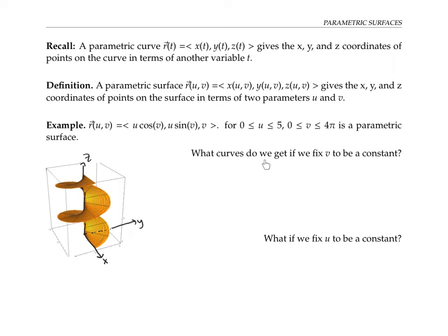What curves do we get if we fix v to be a constant and vary u? For example, if we set v equal to zero, we get r of u, zero, which is u cosine 0, u sine 0, 0, which simplifies to u, 0, 0. That's a line that runs in the x-direction with y and z equal to zero.